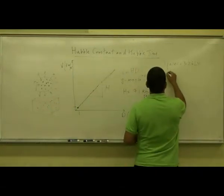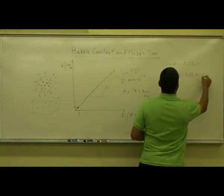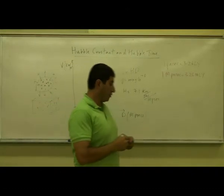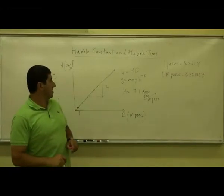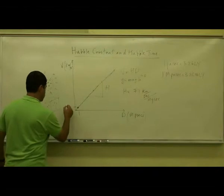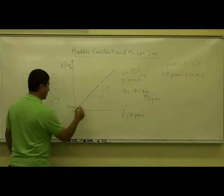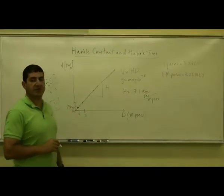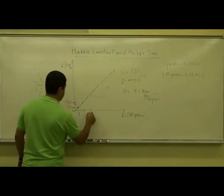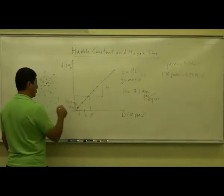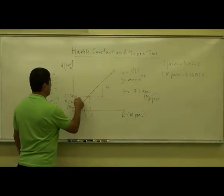So if a galaxy is 1 million parsecs, it's going to be 3.26 million light years. So that's what we mean here. 1 million parsecs, how fast will it be moving away from us? It'll be 71 kilometers per second. If the galaxy is 2 million parsecs, it'll be moving away from us double that, 142 kilometers per second. If it's 3 million parsecs, it'll be moving away from us at 3 times that, 213 kilometers per second, and so on.